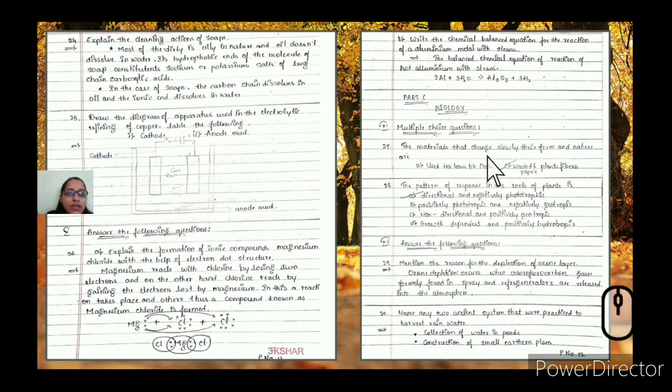Coming to the biology part. The materials that change slowly their form and nature are plant fiber materials. The pattern of response in the roots of plant: roots are directional and negatively phototropic, meaning roots grow away from sunlight.